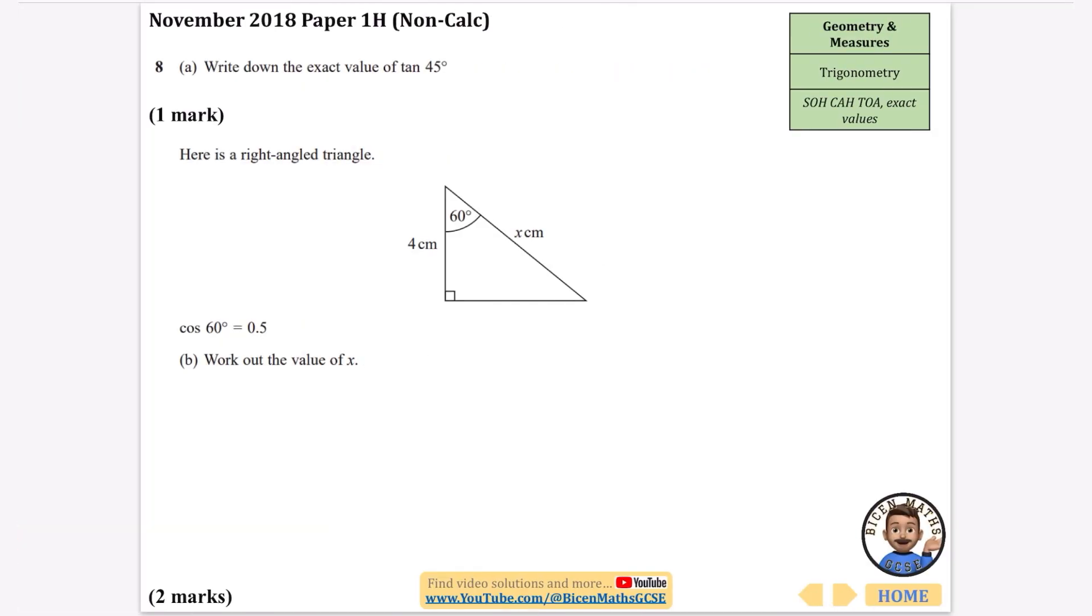The next one says write down the exact value of tan 45. This is another one that you need to know. Tan 45 degrees is equal to one. So it then says here is a right angle triangle. Cos 60 equals 0.5. They tell you this. Work out the value of x. Well, it's definitely going to be to do with cos because I have the hypotenuse. I have the adjacent and they told us it was about cos. So it's to do with the adjacent and the hypotenuse.